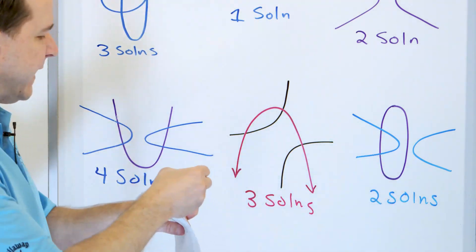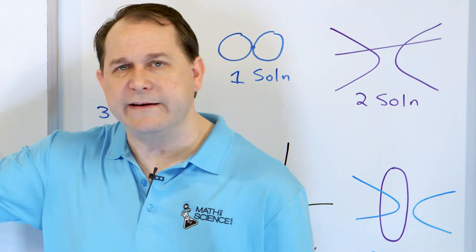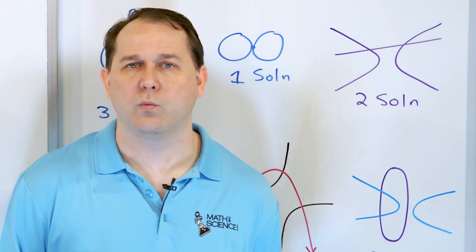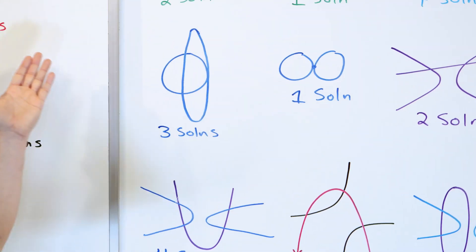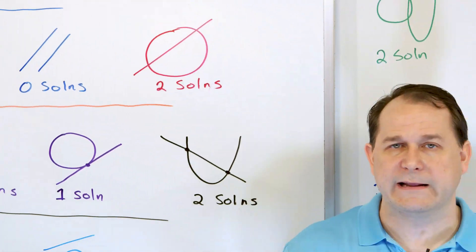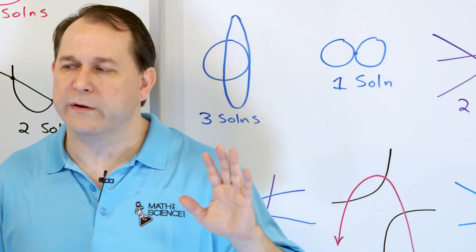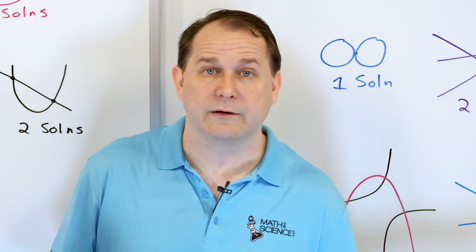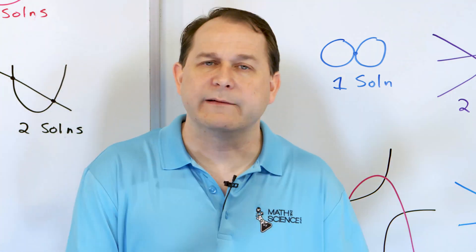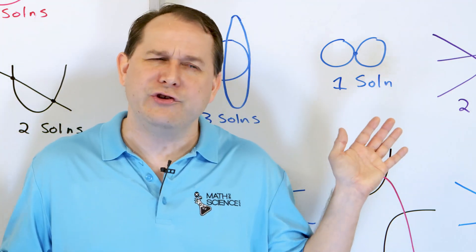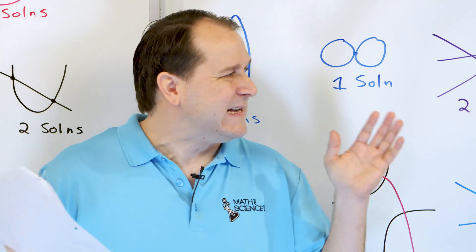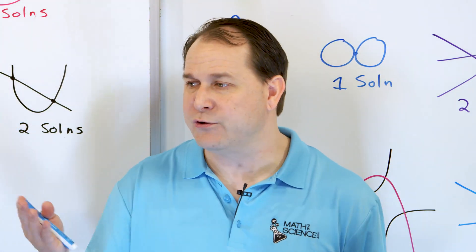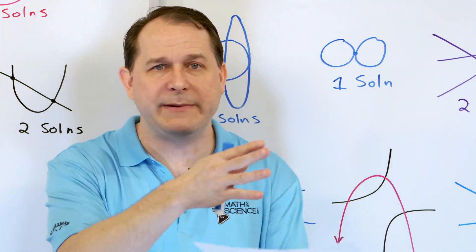I could have simplified this entire lesson by just saying: we have conic sections and lines, and we call a system involving them a quadratic system. You can have zero, one, two, three, or four crossing points. But I wanted to sketch these examples because in the next lesson we'll start solving these systems mathematically. When you get those different numbers of solutions, you'll know why — it's just the physical nature of how the curves intersect.